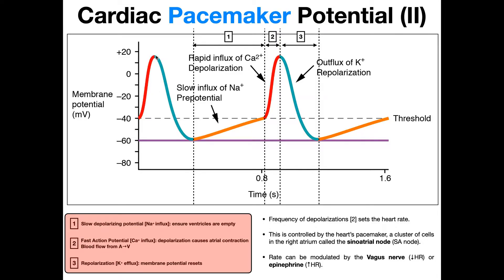Remember, at the end of skeletal muscle contraction, we had a repolarization — where we take the membrane potential from a positive value and return it to rest. The inside of the cell is getting more negative, and it's going down. This is the repolarization shown in green. Now, the pacemaker cells have three types of voltage-gated channels: a voltage-gated sodium channel, a calcium channel, and a potassium channel.